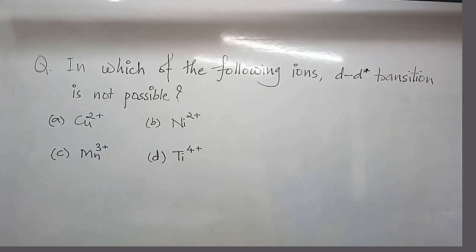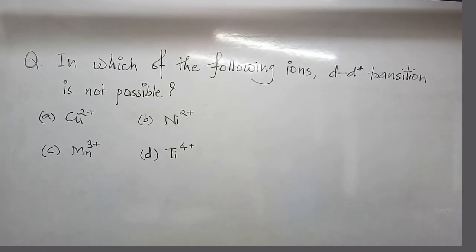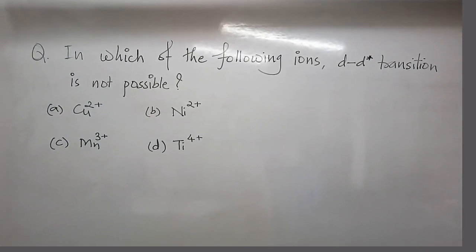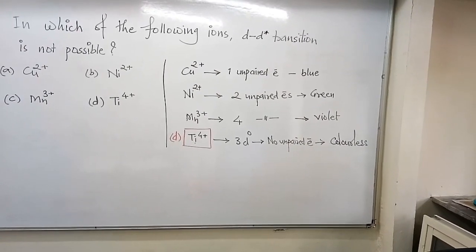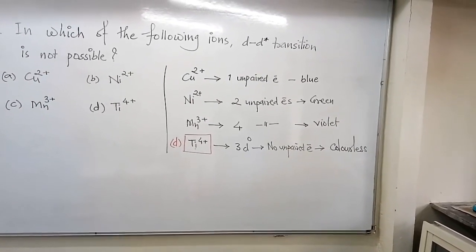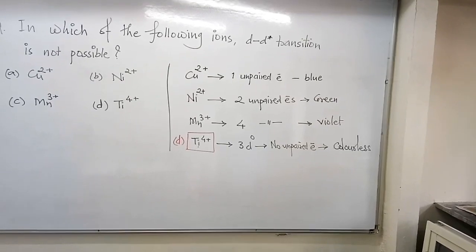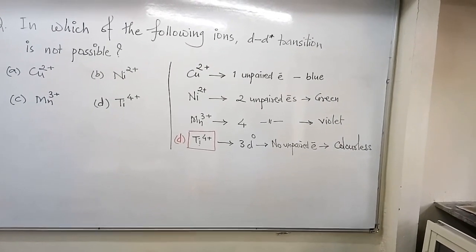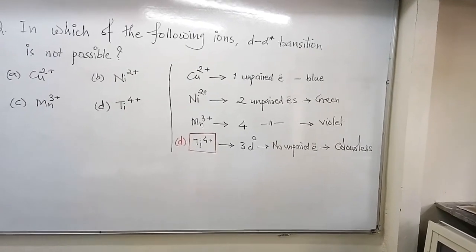The next question is in which of the following ions D-D transition is not possible. If there is no unpaired electrons so there is no excitation of electrons, so in case of Ti4+ D-D transition is not possible.